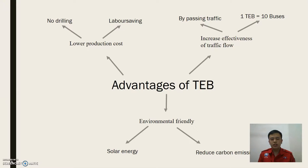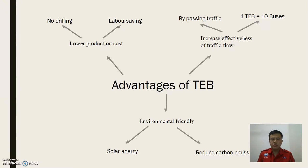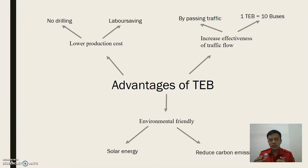Last but not least, the T-E-B is also environmentally friendly. The T-E-B is powered by electricity generated using solar energy. At every T-E-B station, there will be a solar panel installed on the roof of the station, which stores the energy in a battery and transfers it to the T-E-B using a relay charge system.